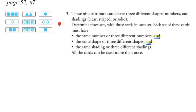From these nine cards, we are asked to build sets of cards, and each of our sets must contain three cards. Using the three attributes — number of objects, shape of object, or shading of object — each set must contain either all the same number of objects or three different numbers, all the same shape or three different shapes, and all the same shading or three different shadings. We can use the cards more than once to build the three sets.